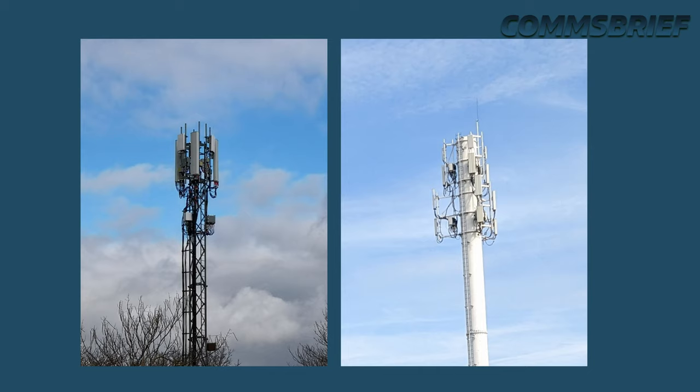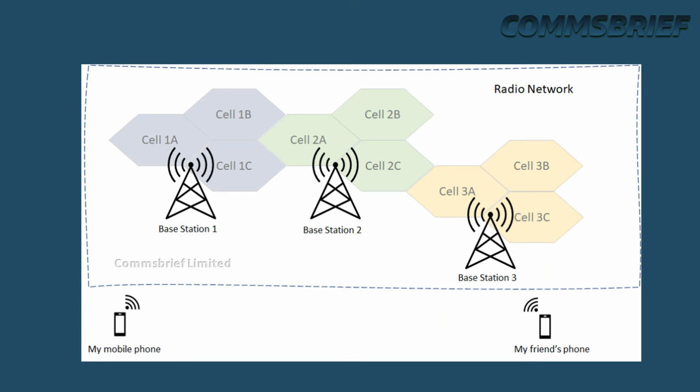The coverage created by a base station is the building block of the overall mobile network coverage, consisting of many base stations spread throughout towns, cities and countries. The coverage area of a single base station is called a cell, and this cell is the building block for the overall mobile network coverage. In other words, a mobile network consists of many cells spread throughout towns, cities and countries. This cellular architecture is the reason this network is called a cellular network.